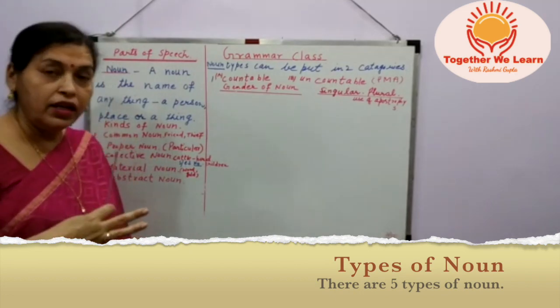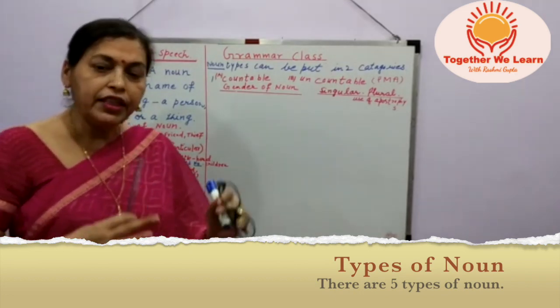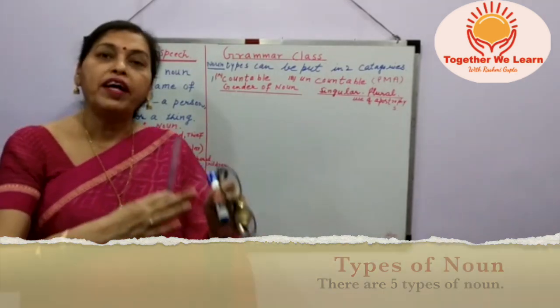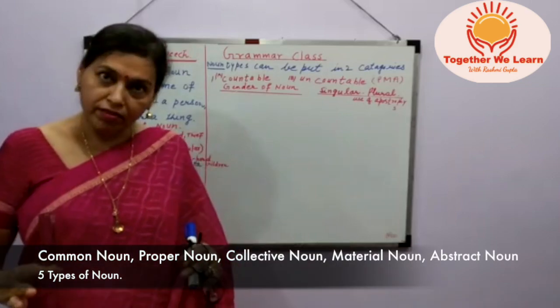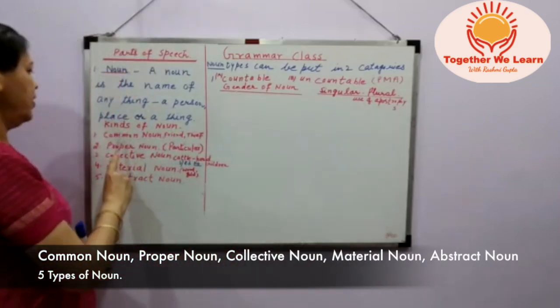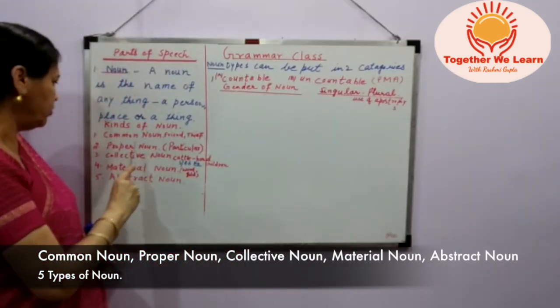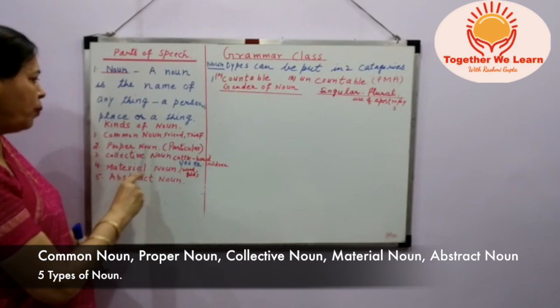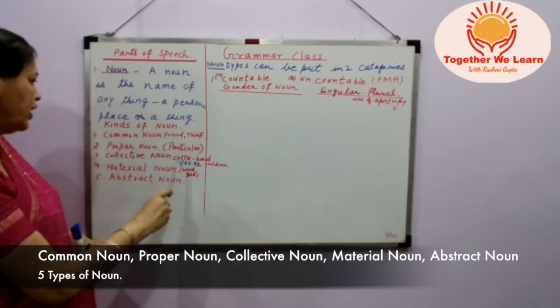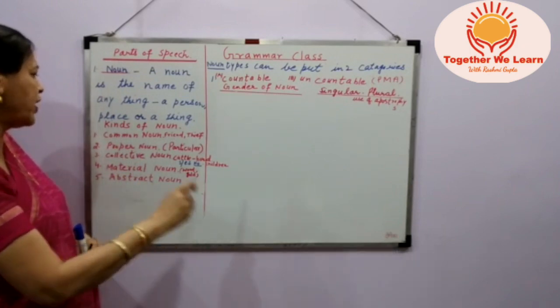Noun is divided into five parts: common noun, proper noun, collective noun, material noun, and abstract noun.